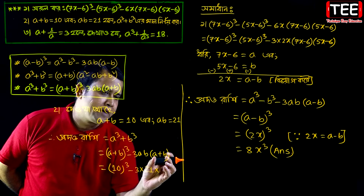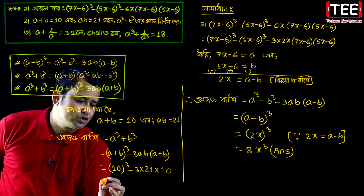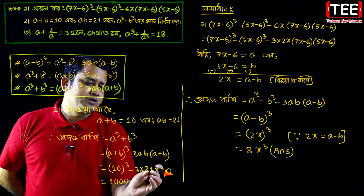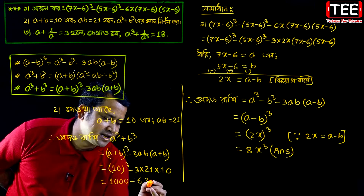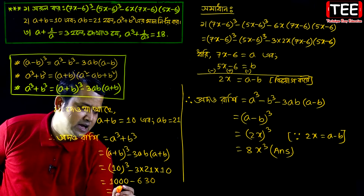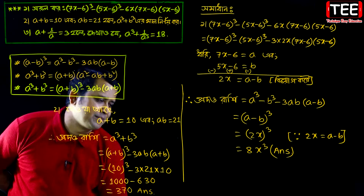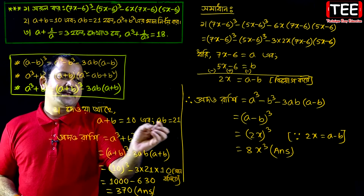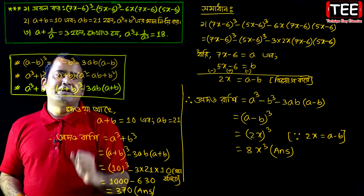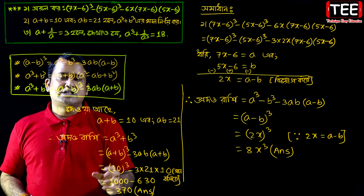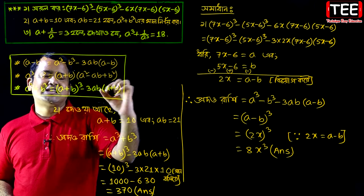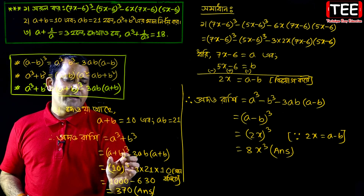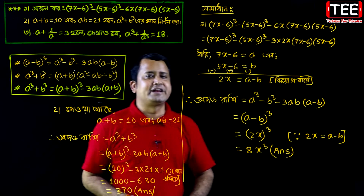So a cube plus b cube equals 10 cube minus 3 into 21 into 10. That is 1000 minus 630, which equals 370. So the answer is 370.